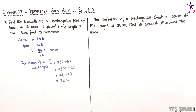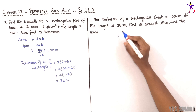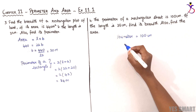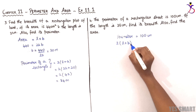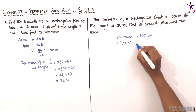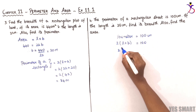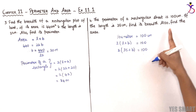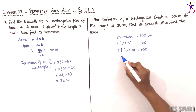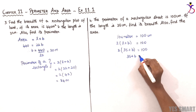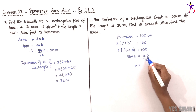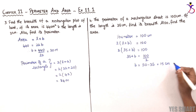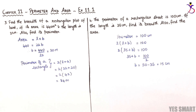Now let's discuss the fourth sum. The perimeter of a rectangular sheet is 100 centimeters. If the length is 35 centimeters, perimeter formula is 2 into (L plus B). Substituting: 2 into (35 plus B) equals 100. Transposing 2, we get 35 plus B equals 50. Therefore B equals 50 minus 35, which equals 15 centimeters.